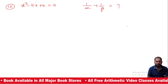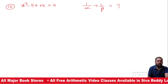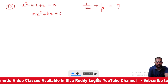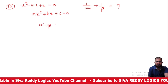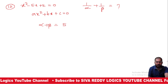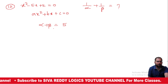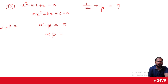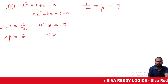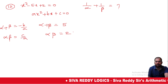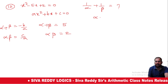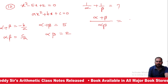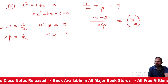x squared minus 5x plus 2 equals 0. Find 1/α + 1/β. Using ax² + bx + c format: sum of roots α + β = -b/a = 5 by 1. Product of roots α × β = c/a = 2. So 1/α + 1/β equals (α + β) / (α × β) = 5 / 2. The answer is 5 by 2.